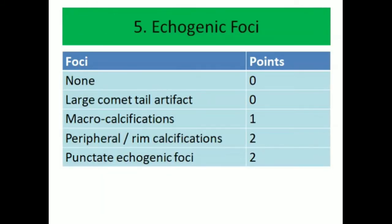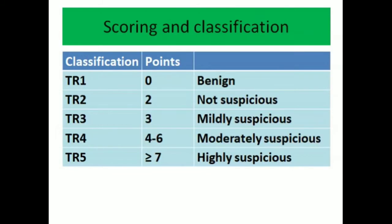Fifth is echogenic foci. If there are no foci or if there are large comet-tail artifacts, the points will be zero. If the nodule contains macrocalcification, the points awarded will be one. If there is a peripheral rim of calcification, axial calcification, or punctate echogenic foci, the points awarded will be two.